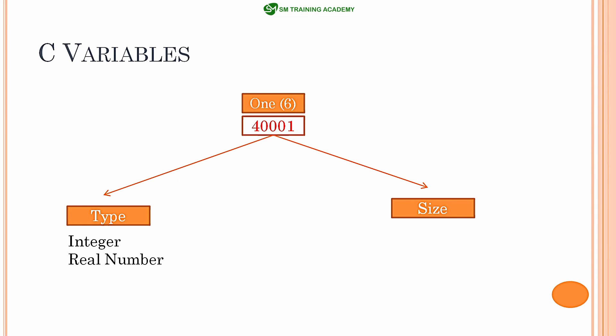Type defines whether it is integer data or real number data that you are going to store. Integer data is nothing but whole numbers like 0, 1, 2, 3, 4, etc. Real numbers are decimal numbers like 2.5, 25.4, etc., while integer data are non-decimal numbers. The size of data is another characteristic for variables declared using a particular data type in C language. We will discuss data types in the next video.